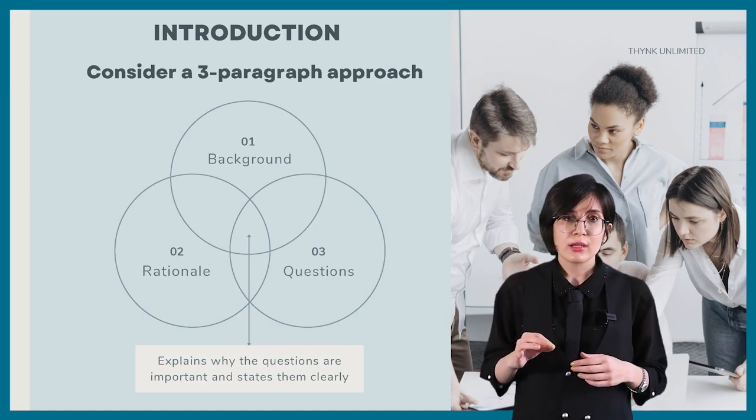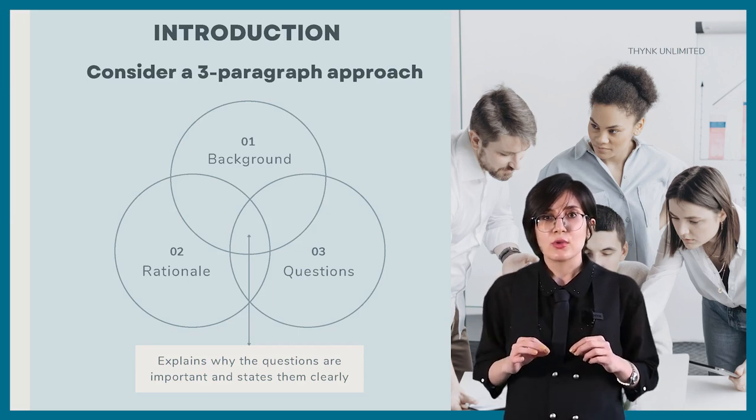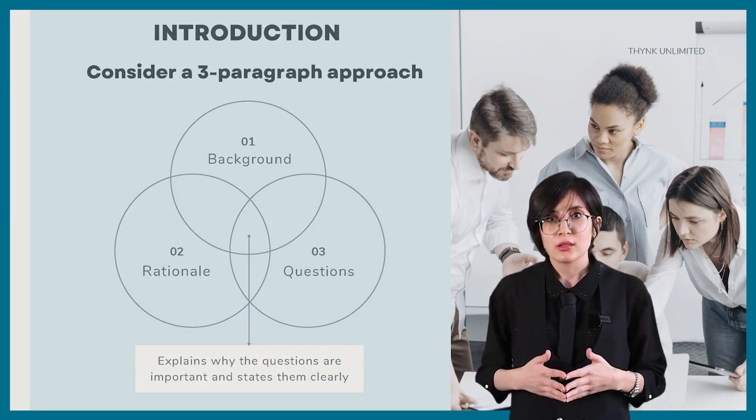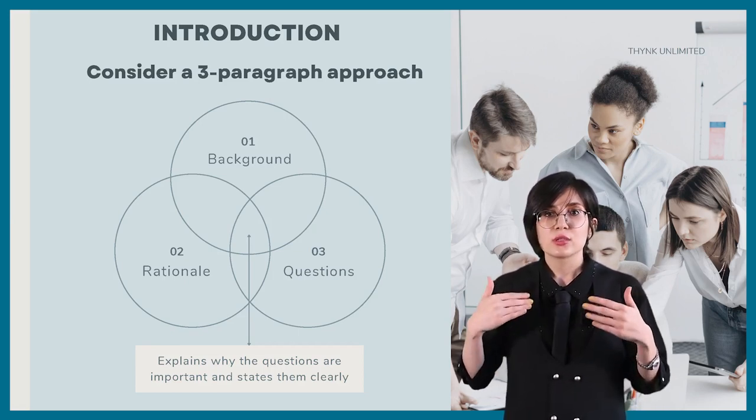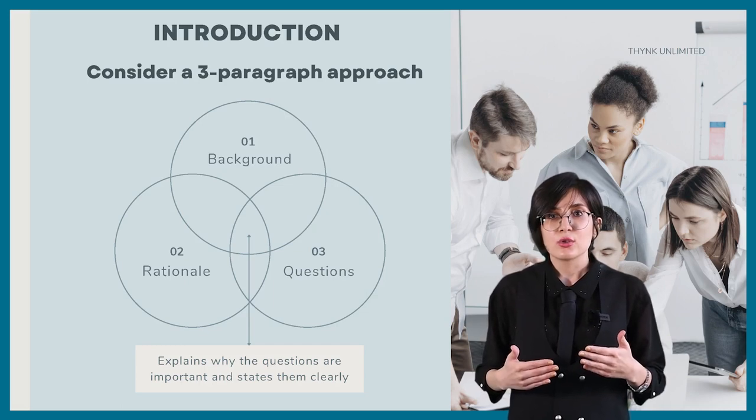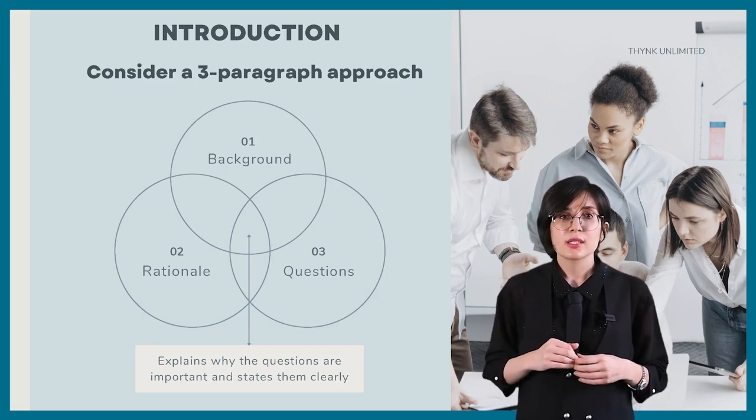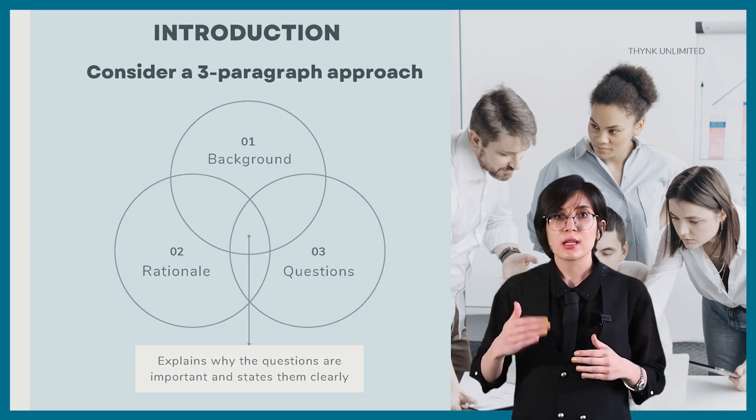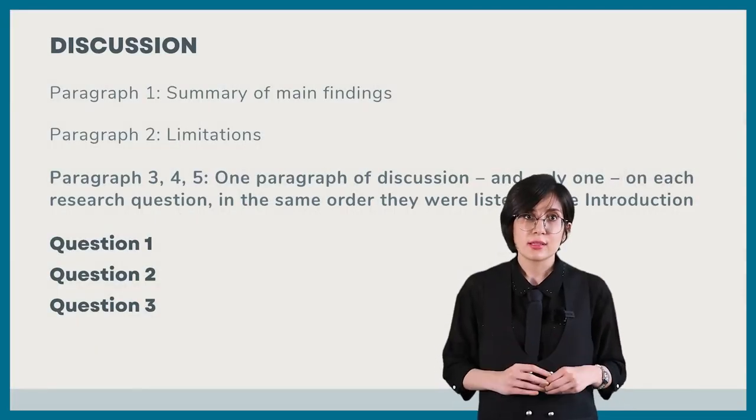The second paragraph is the rationale. What gaps in knowledge did you hope to fill with your article? What will readers gain that they don't already have? What controversies did you hope to help settle? And the third paragraph is the questions. Number and state your specific research questions or purposes in the third paragraph.